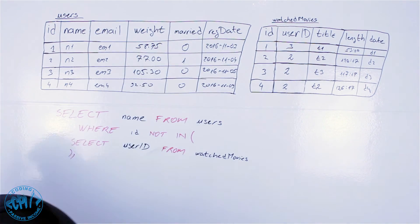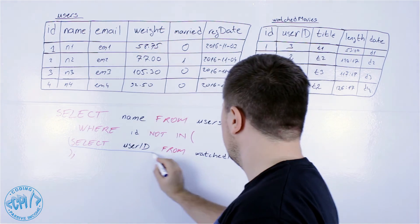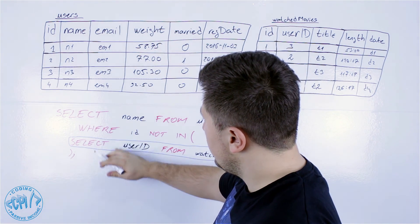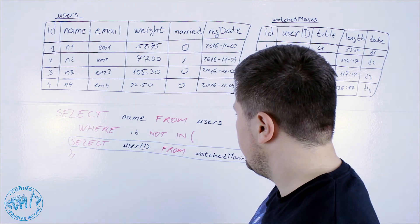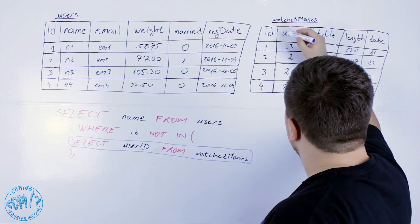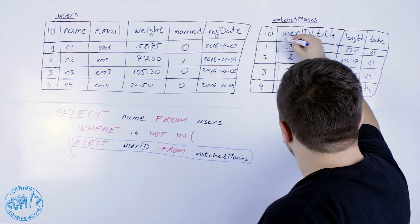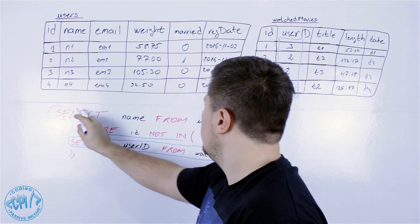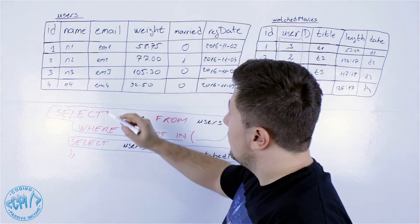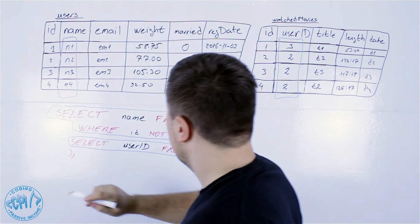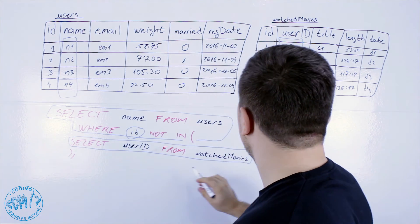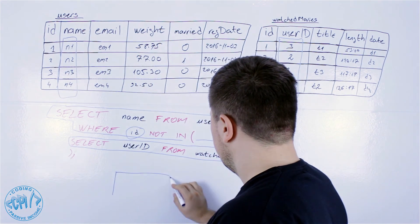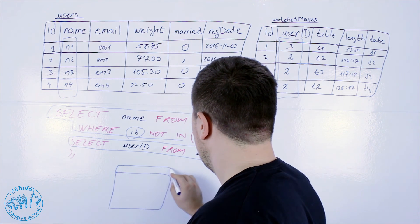So in this query here, as you can see, this query here is the subquery because it is the query inside this main query. And now if we execute this, the result will be that we will select only this. And now with this query here we will get all the names where ID not in here.